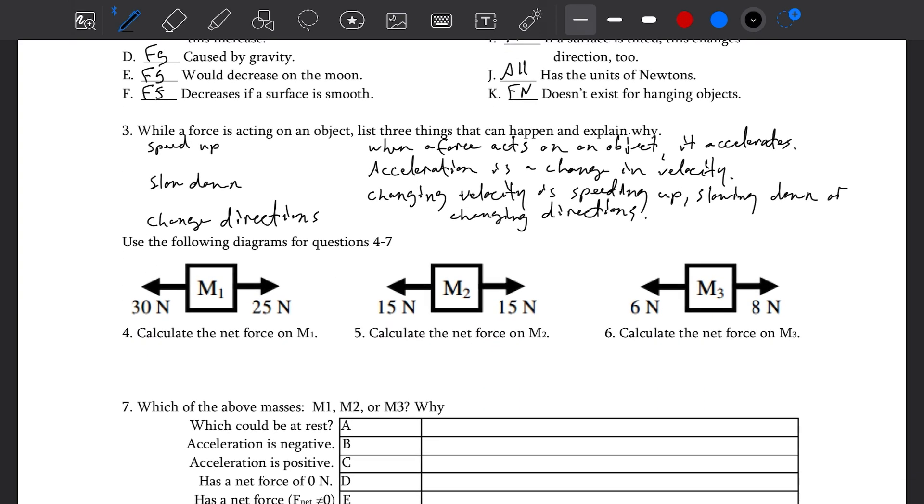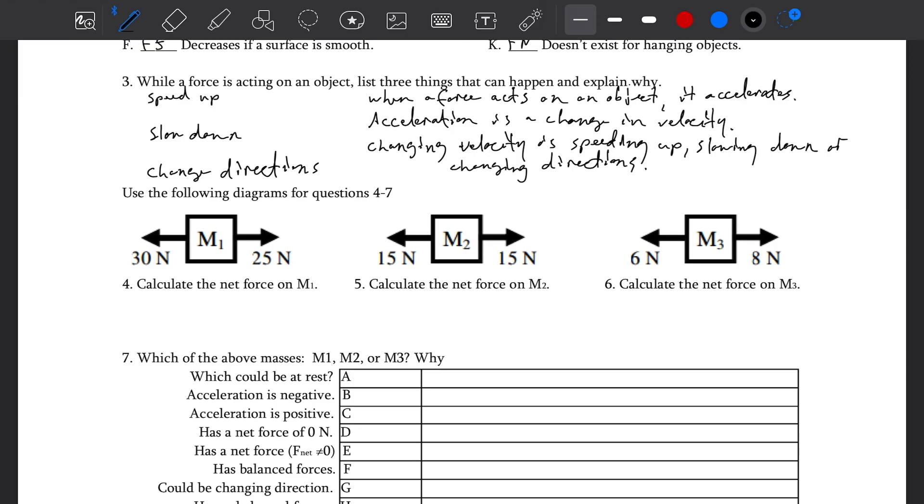We've got three diagrams for four through seven. Calculate the net force on M1. We have 30 to the left, 25 to the right, so 5 to the left is the net force. I'm using an arrow to indicate the direction. No net force if it's 15, 15, and 2 to the right when 8 is to the right, 6 to the left.